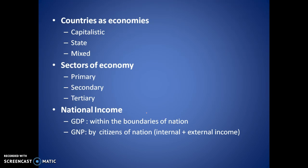Then we have Gross National Product — GNP — which covers production by the citizens of a nation: internal produce plus external income. For example, Bajaj is operating in Africa and producing bikes there, but since it is an Indian company, that produce is included in India's GNP. So exports, imports — everything is included here.